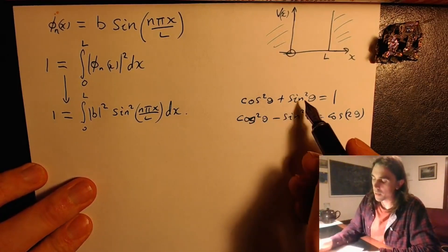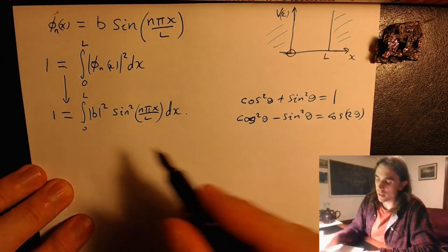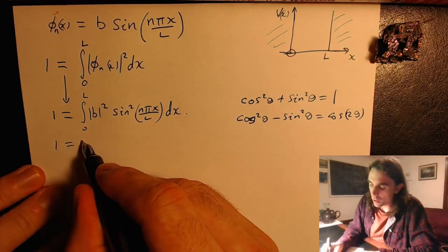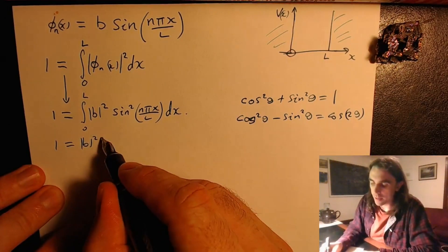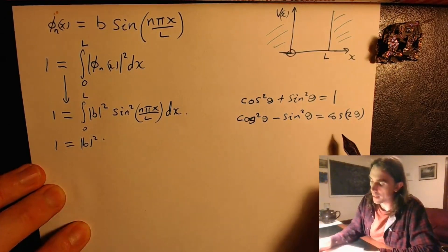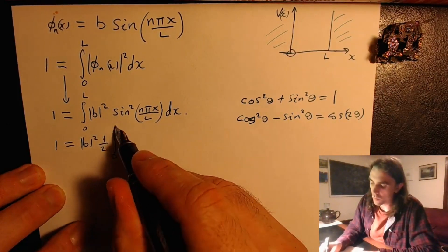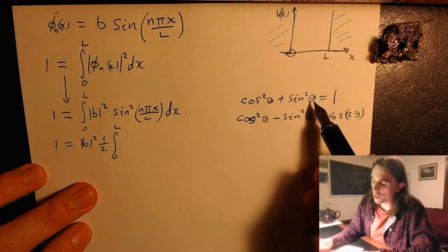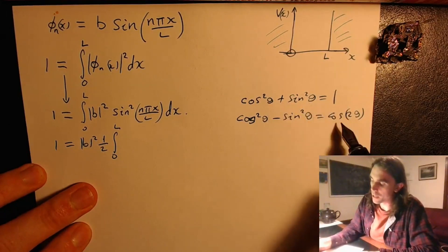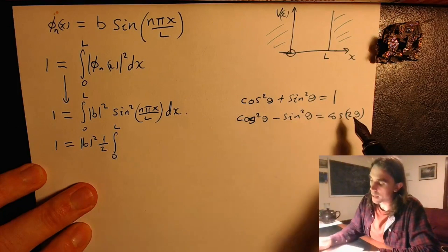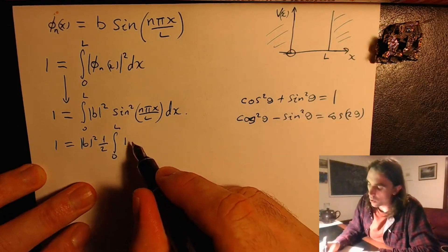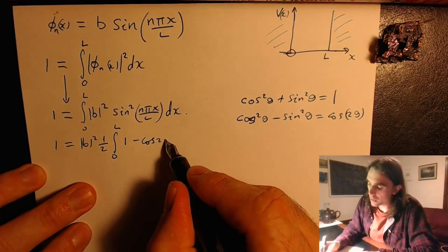So we have a sin squared, so we want to take this one minus this one and divide by 2. So we have that 1 equals, we can bring the b squared out of the integral, and actually we're going to have a half as well. So we're just going to take the top equation and subtract this equation and then divide by 2 to get sin squared. So we're going to have 1 minus cos 2 theta.